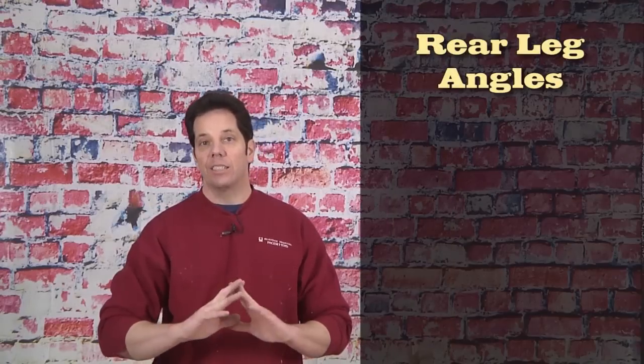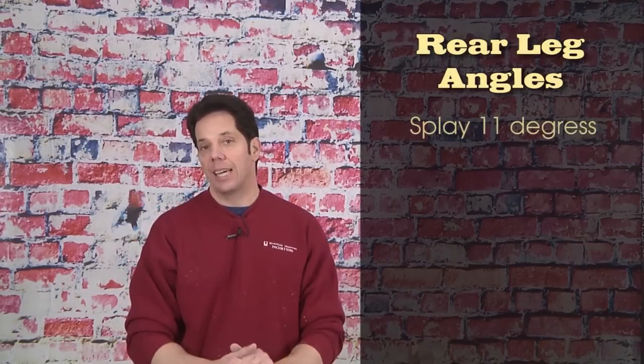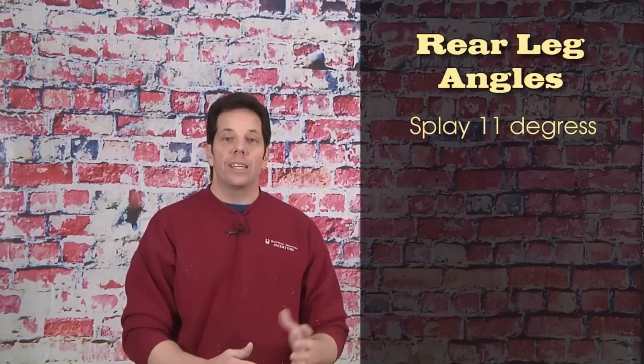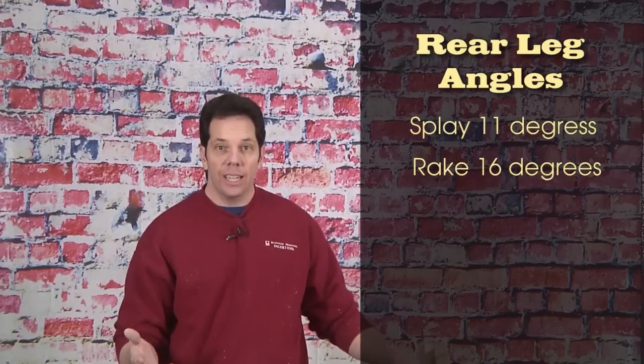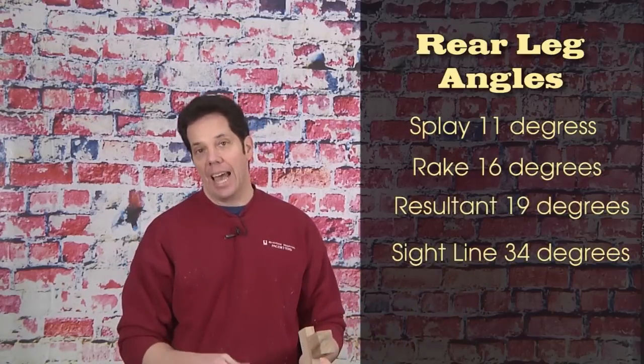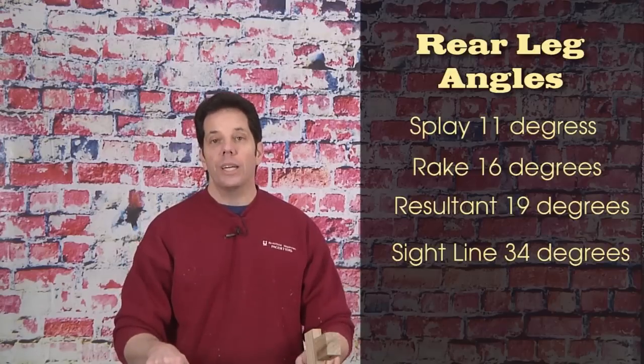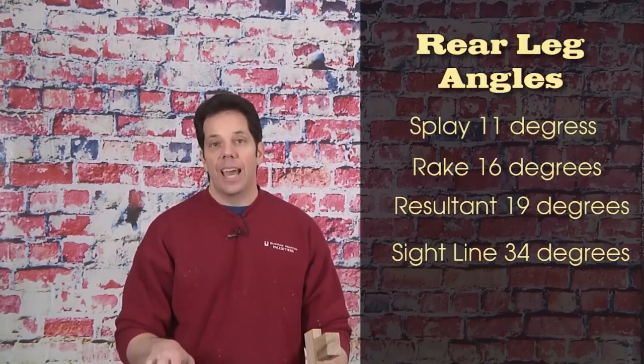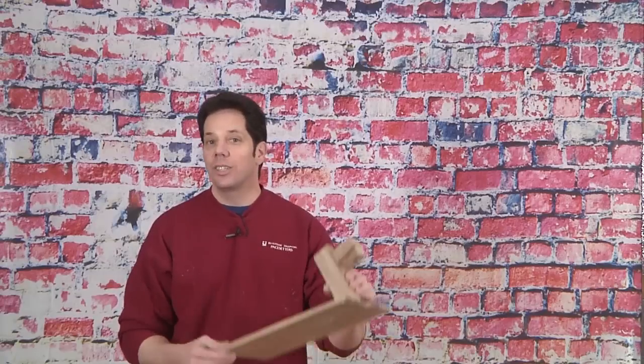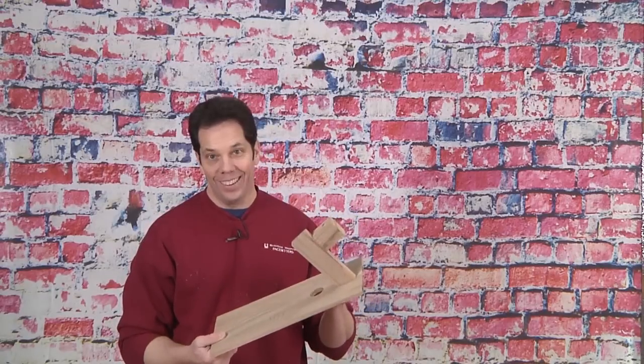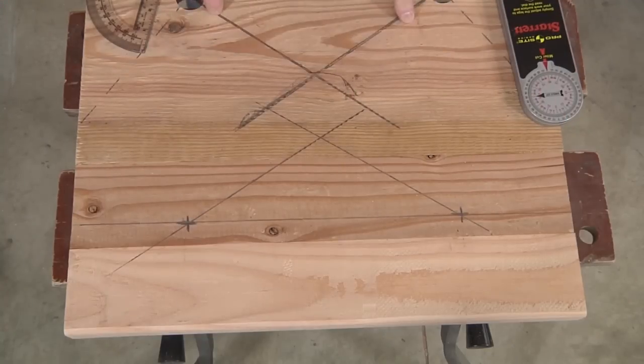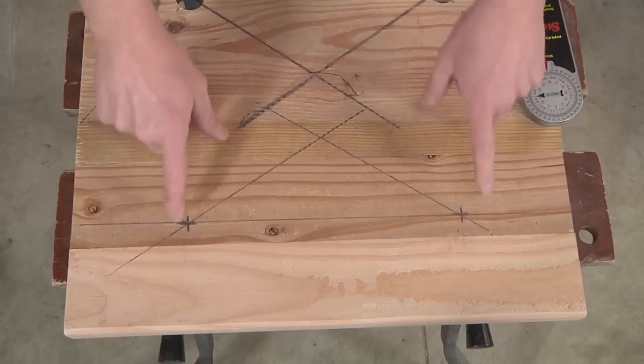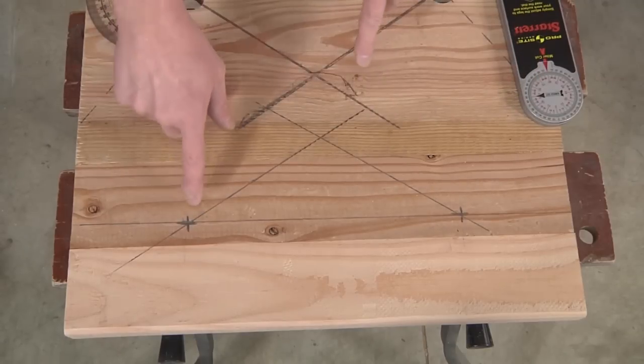Now, keep in mind that the back legs I have at a slightly different angle. I kept the splay the same at 11, but the rake, I bumped it up to 16 degrees. And then that gave me a different resultant line, and it gave me a different sight line angle as well. So, I'm going to, real quick, lay out the sight line angle again on the seat, and then I'll show you how this jig really works well. So, the sight line angles I have on here, and as I said, they're different from the front. In doing the geometry on this, the sight line angles came out to be 34 degrees.